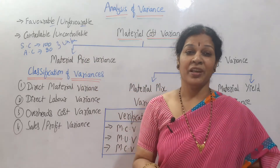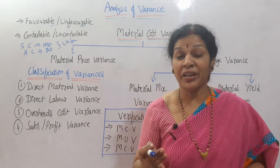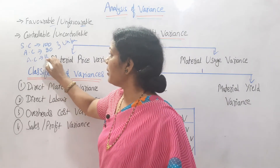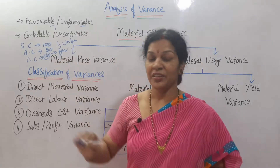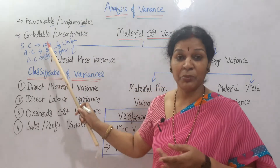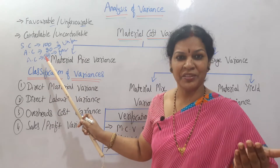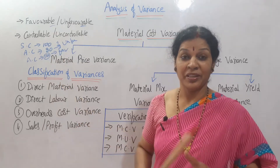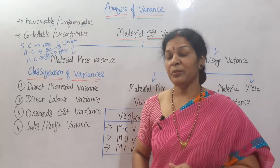Unfavorable means actual cost could not meet the standard cost — it must be more than that. If actual cost is say 120 rupees, then it would be a favorable balance. If it is 80 rupees, unfavorable; 120 rupees, favorable. Why favorable? Standard cost is 100, but actual cost is higher at 120 — we are getting more price, so this is a favorable balance. Please note this important distinction.